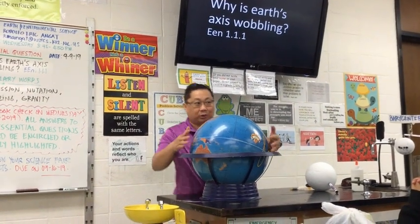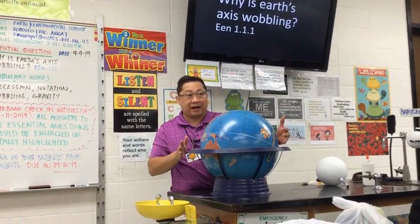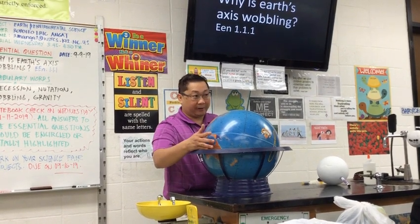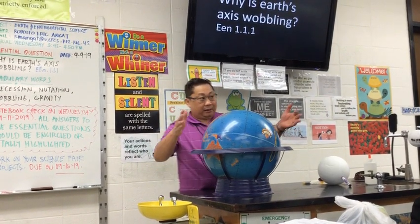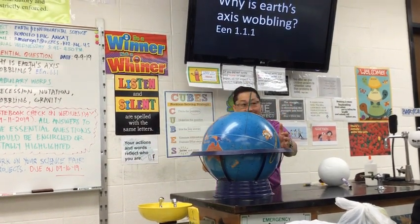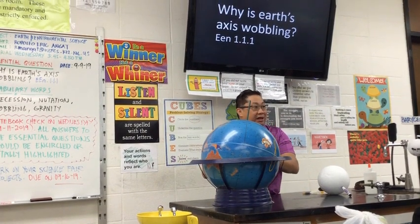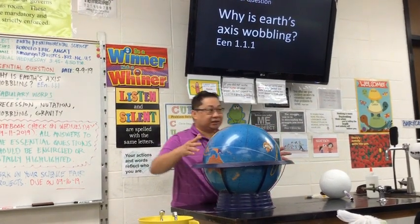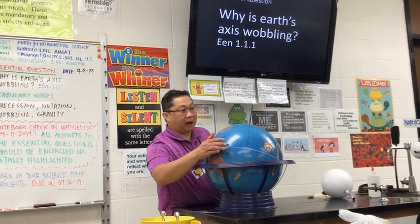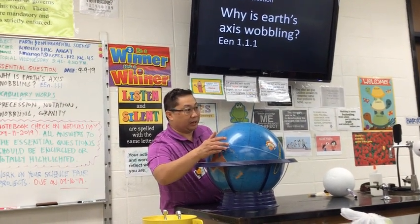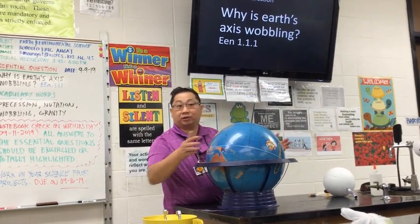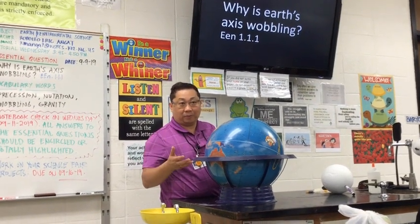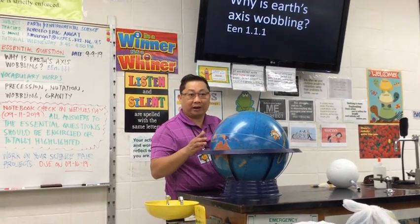As the Earth rotates, it causes day and night. It causes the Coriolis effect. And this same rotation causes the shape of the Earth to bulge at the equator. Earth's rotation is completed in 24 hours.